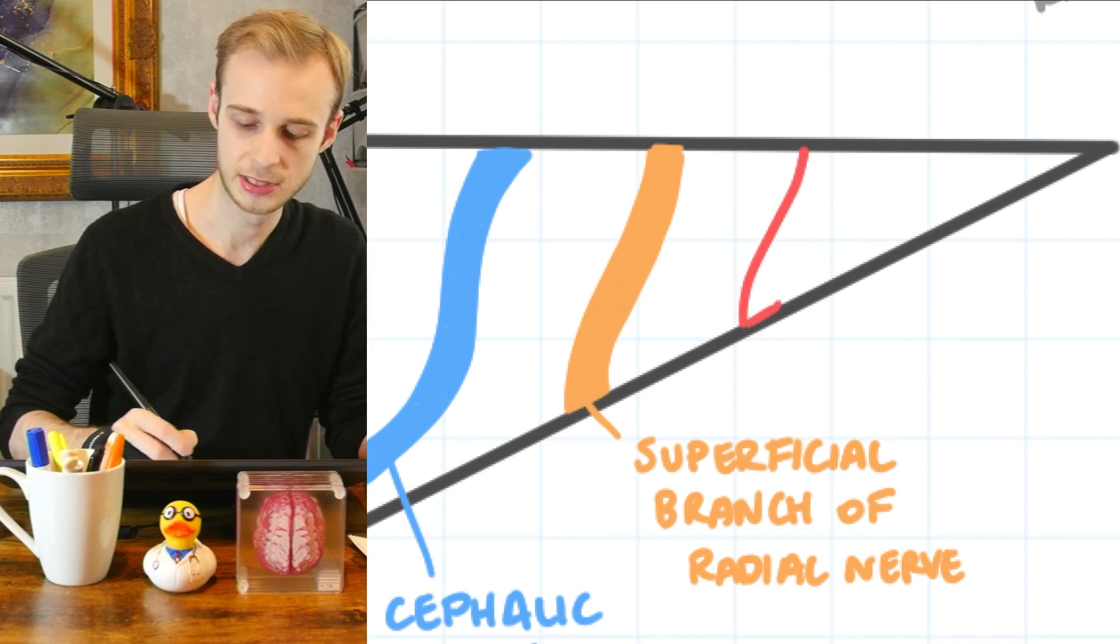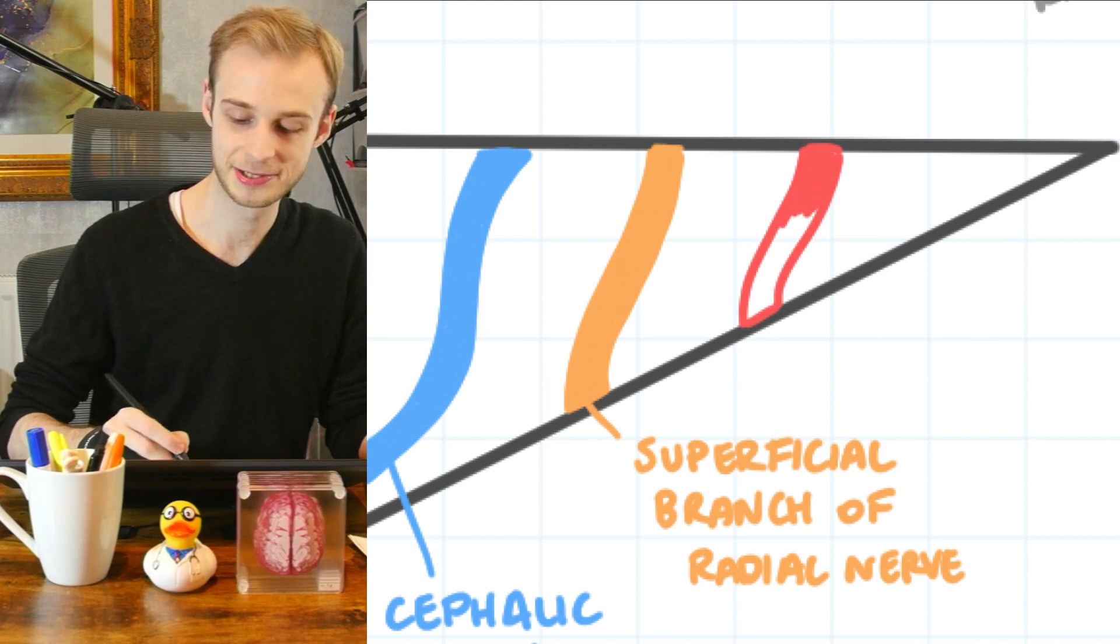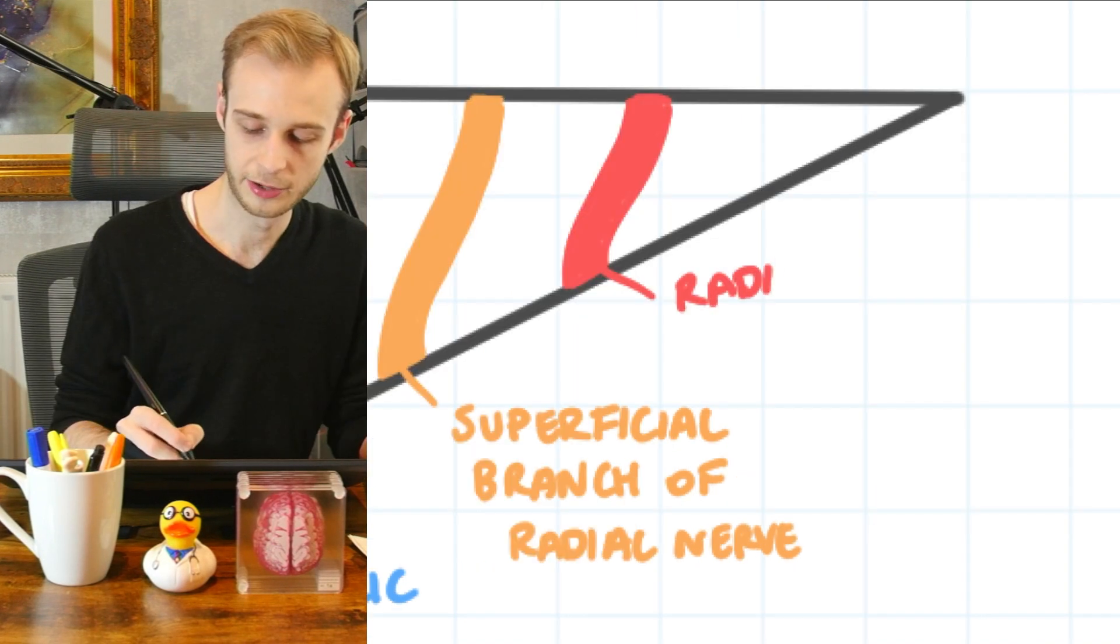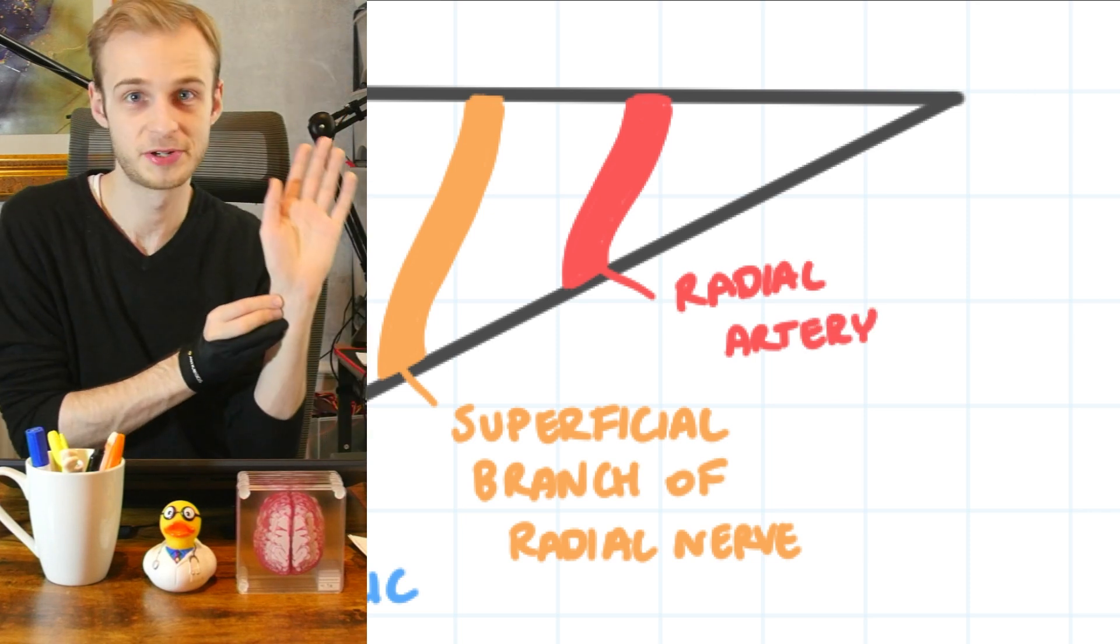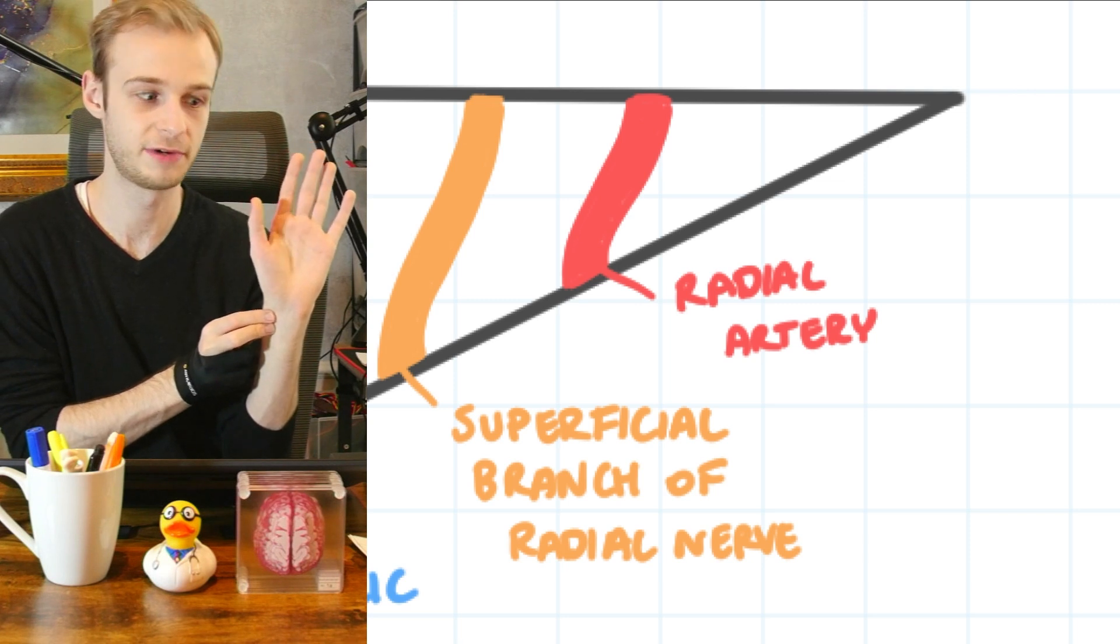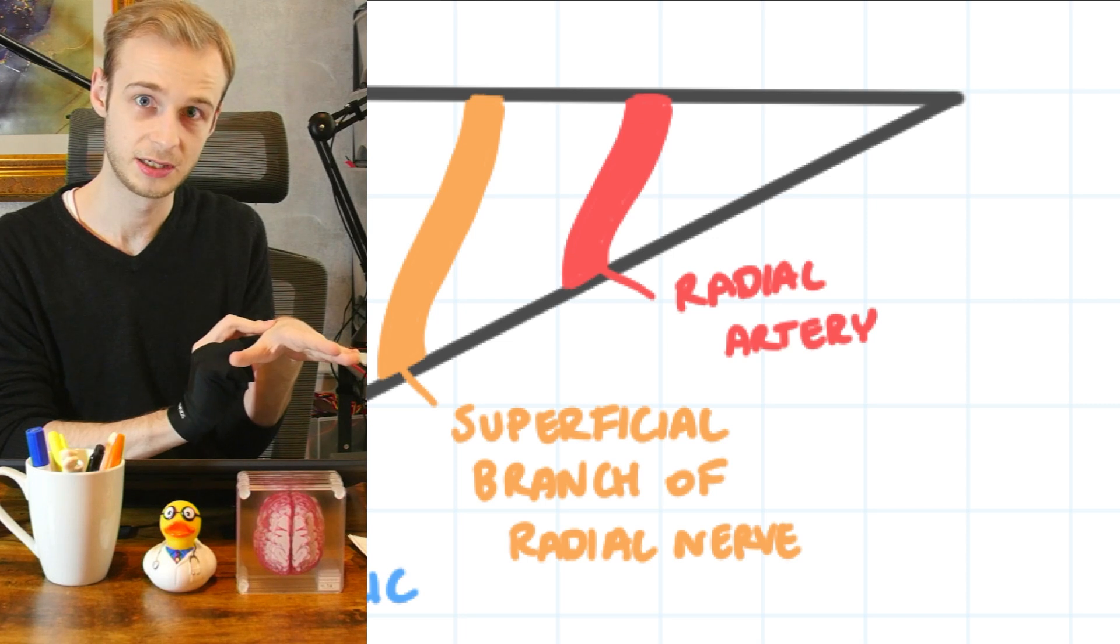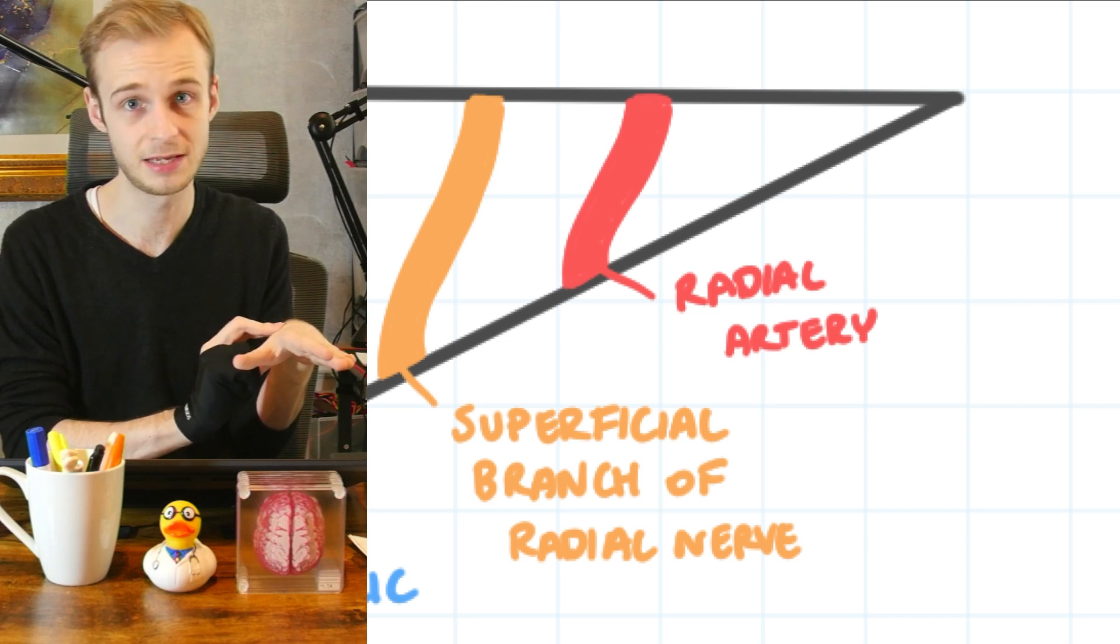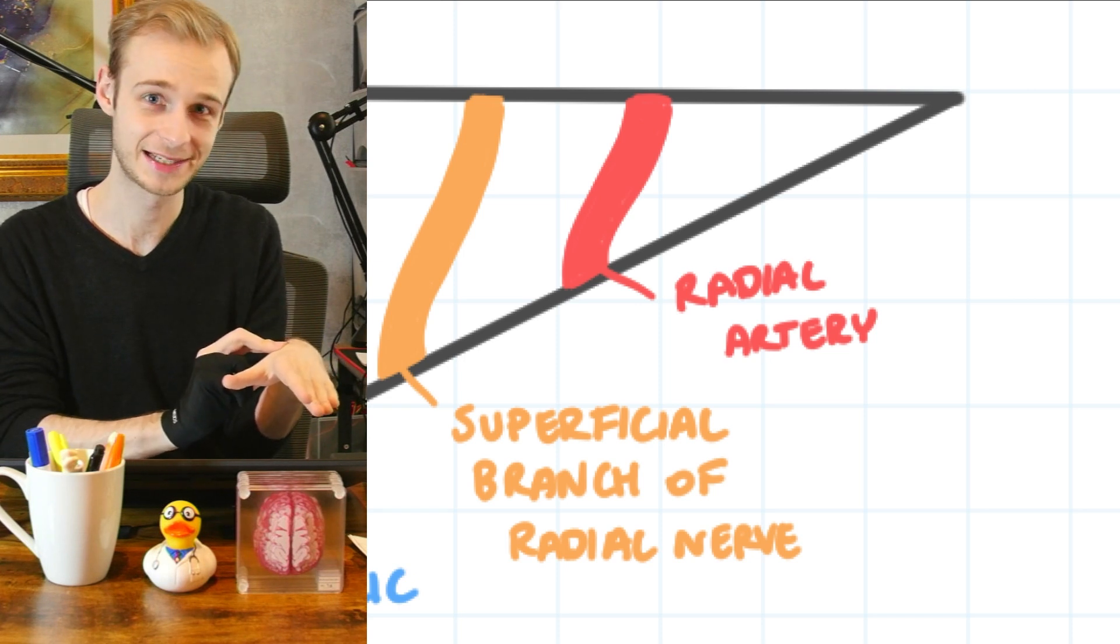And then finally, most distally, we have a pulsatile artery. I'm sure you can guess which artery it is based on where it is. This is the radial artery. Now, if you press hard, you may be able to feel this pulsating. Because of course, most of us are perfectly used to the idea that you can take a radial pulse at the base of the wrist on the radial side. If you extend the thumb and press very hard in the anatomical snuffbox, if you're quite skinny, you may be able to feel the radial artery pulsating, as I can now with my index finger.